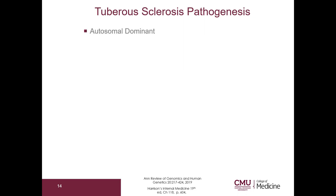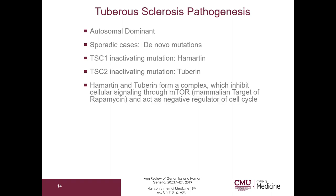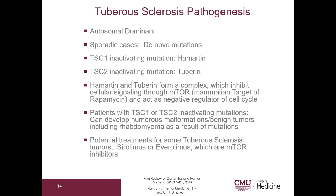Let's take a look at the pathogenesis. This is autosomal dominant; however, there are also sporadic cases due to de novo mutations. This can be due to TSC1 inactivating mutation in hamartin or TSC2 inactivating mutation in tuberin. Hamartin and tuberin form a complex which inhibits cellular signaling through mTOR and acts as a negative regulator of the cell cycle. Patients with TSC1 or TSC2 inactivating mutations can develop numerous malformations or benign tumors, including rhabdomyoma. Potential treatments for some tuberous sclerosis tumors include sirolimus and everolimus, which are mTOR inhibitors.